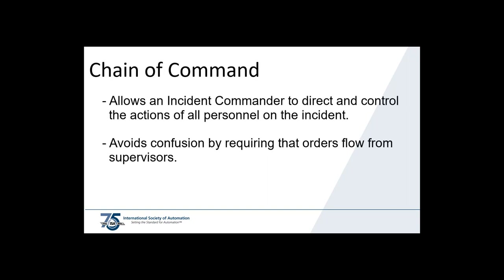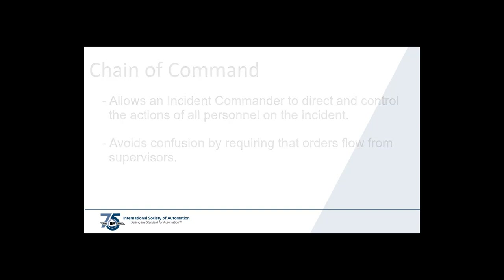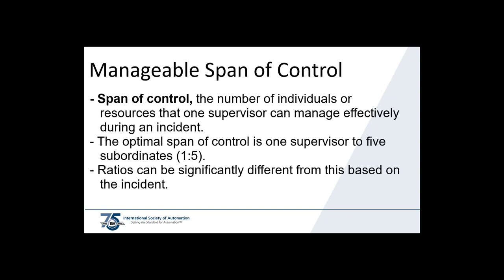Chain of command does not prevent personnel from directly communicating with each other or sharing information — informal information sharing occurs throughout the ICS structure. Span of control refers to the number of individuals or resources that one supervisor can manage effectively during an incident. A manageable span of control may vary depending upon the type of incident, nature of the task, hazards, safety factors, and distances between personnel and resources.